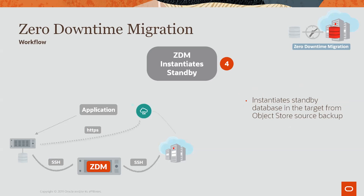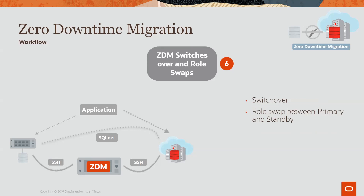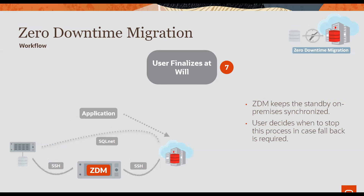ZDM service host connects to the target database server and instantiates the standby database on the target from the object store source backup. This is done with Data Guard maximum performance protection mode and asynchronous redo transport mode. After the standby database is set up on the target server, SQL net connectivity is established between source and target, and synchronization between the primary and standby starts. Once synchronization is complete, ZDM does a switchover and swaps the role of the target database to be the new primary. If there is SQL net connectivity between the new primary and new standby after the switchover, the configuration continues to synchronize data. If there is no SQL net connectivity, no synchronization of data takes place, and the user decides when to stop this process in case fallback is required.